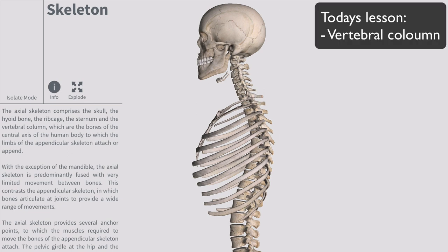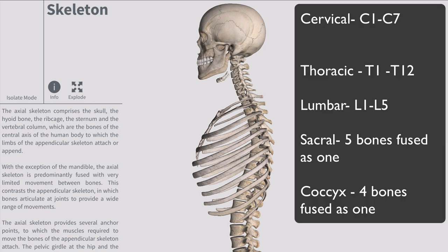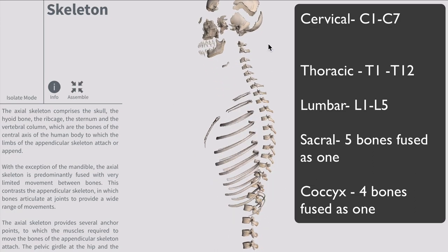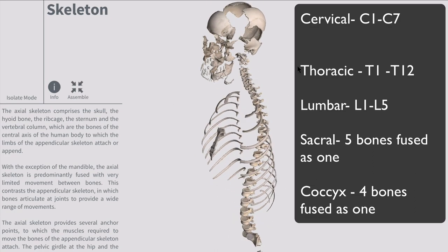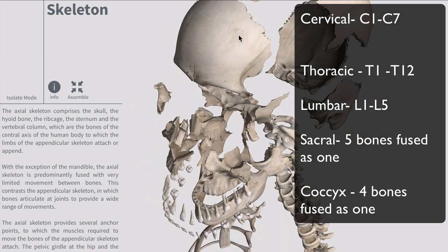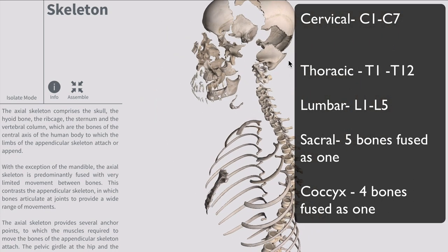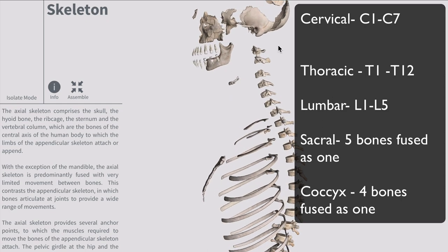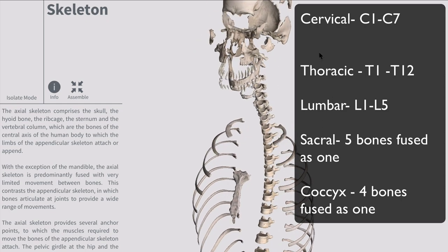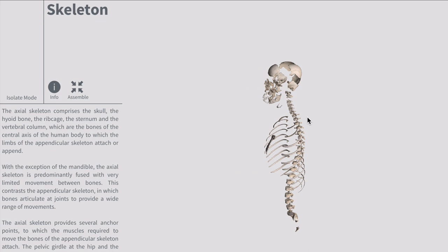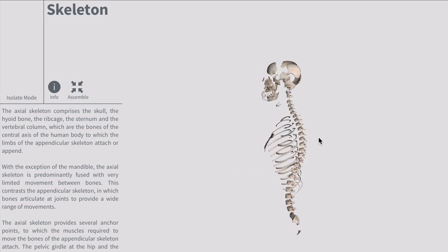Today's lesson is focused on the vertebral column. The vertebral column has the cervical region C1 to C7, the thoracic region which has 12 vertebrae, and the lumbar which has 5 vertebrae. Then there's the sacral, which is basically 1 bone but made of 5 bones fused together, and the coccyx which is the tailbone — 4 bones fused together as 1.